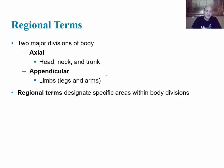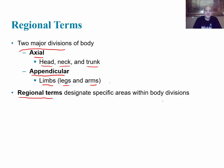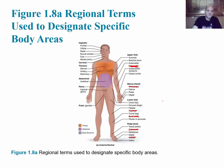Now we will look at regional terms. We can divide the body into two major divisions: the axial division, which is the main axis including the head, neck, and trunk; and the appendicular division, which includes the limbs — arms and legs. Each of these can be further divided into specific regions called regional terms.